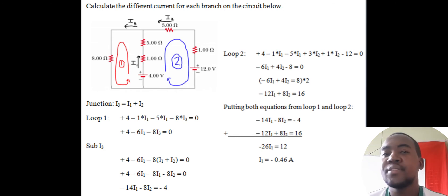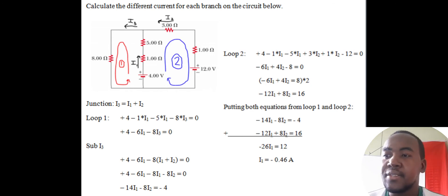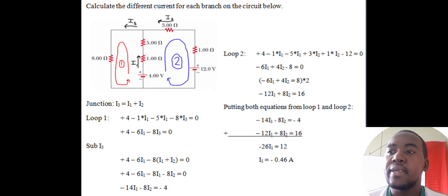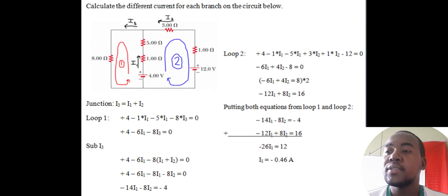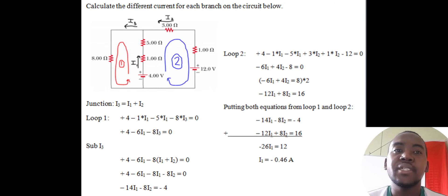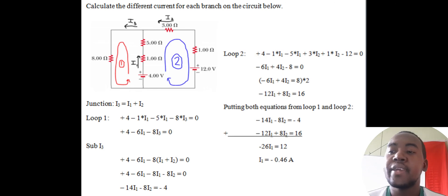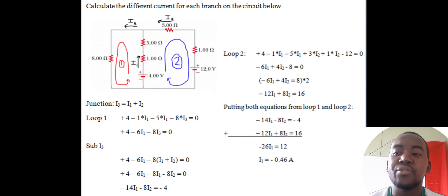Loop 1 (left loop, anti-clockwise): starting at the battery — positive 4V. Going up through the 1-ohm and 5-ohm resistors with I1 also going up — negative 1·I1 minus 5·I1. Then going down through the 8-ohm resistor with I3 also going down — negative 8·I3 = 0. Combining the I1 terms: 4 minus 6·I1 minus 8·I3 = 0.